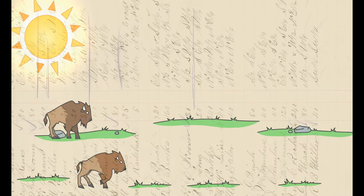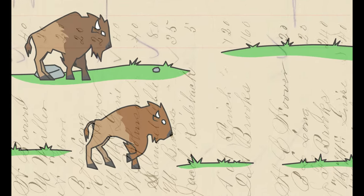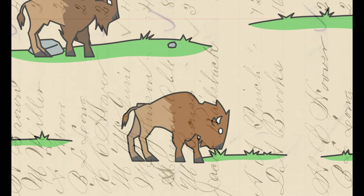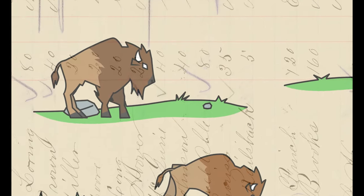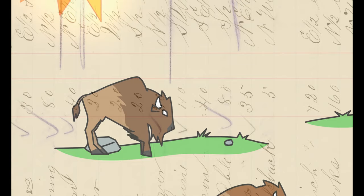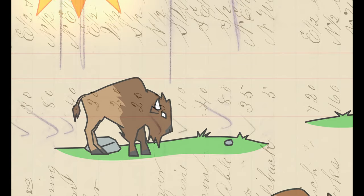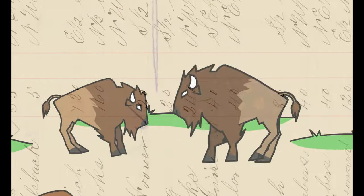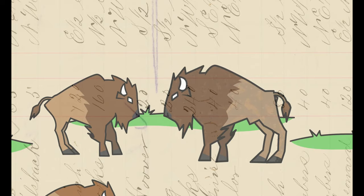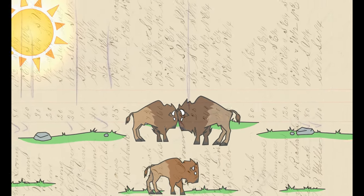A long time ago there were three buffalo bulls. There was Scruffy, the smallest buffalo bull, there was Fluffy, the medium-sized buffalo bull, and then there was Buffy, the biggest, roughest, toughest uncle buffalo bull of all.